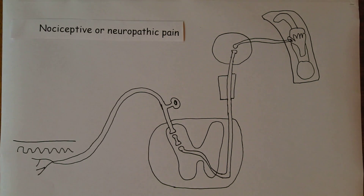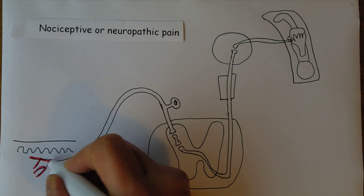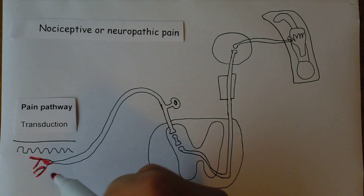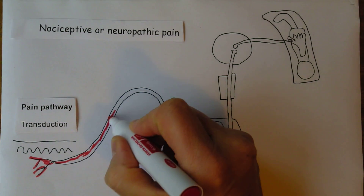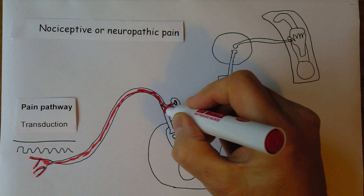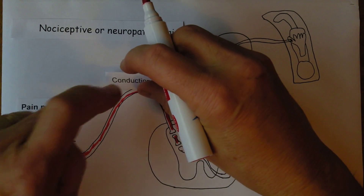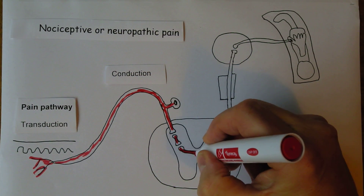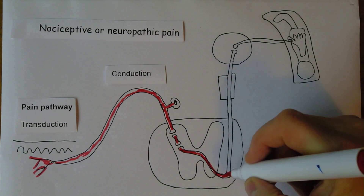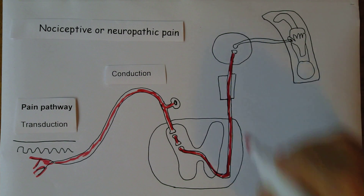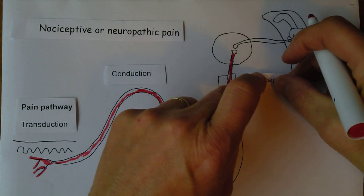Here I've sketched out the classic pain pathway. There's an initial stimulation of the nociceptors which generate a nerve impulse — this is called transduction. The impulse is then conducted up the sensory nerve into the spinal cord, across the synapses in the relay neuron. This is conduction. It then crosses to the other side — decussation — and goes up the spinothalamic tract through the brainstem into the thalamus, which generates the pain. This is the perception stage.